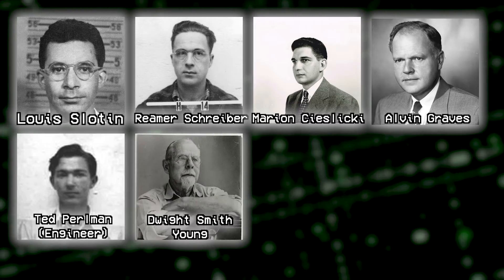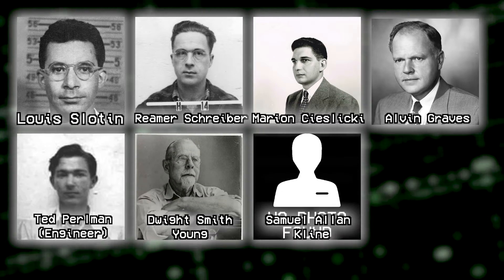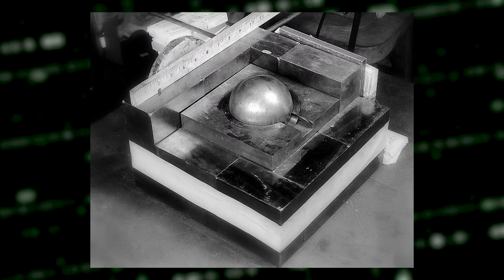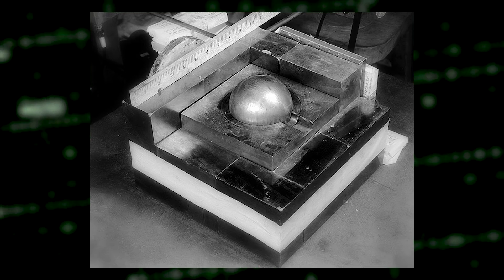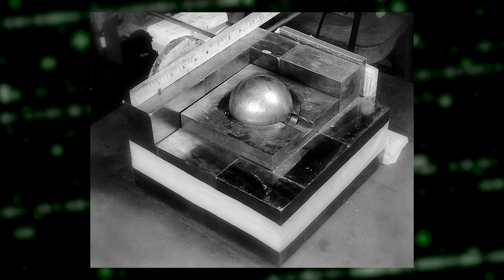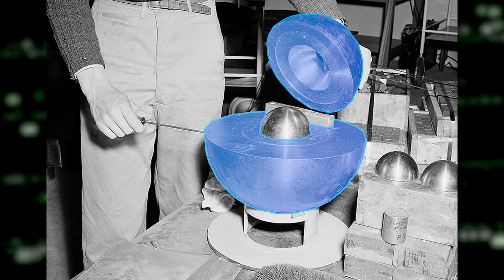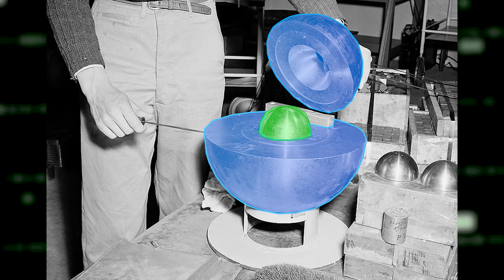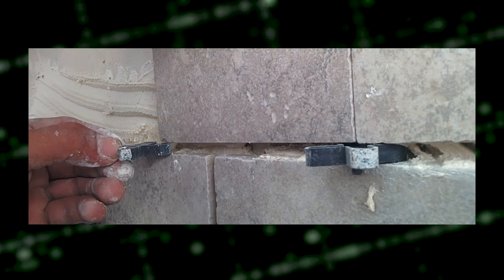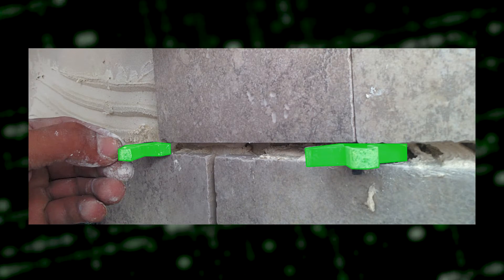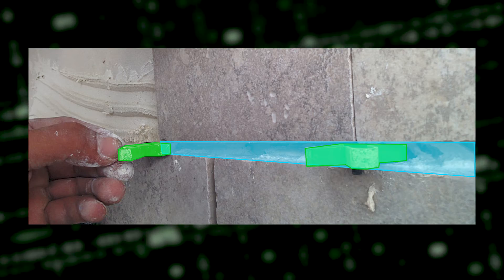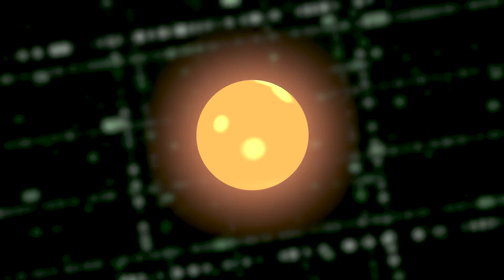The second incident happened on May 21st, 1946, and involved eight people in total — four physicists, one photographer, one student, and one guard. They were conducting the same experiment with the same goal as in the first incident. But instead of using bricks, they used two half-spheres hollowed out so that the plutonium core could fit. The standard protocol was to use shims so that there would always be space for neutrons to escape, therefore avoiding supercriticality.